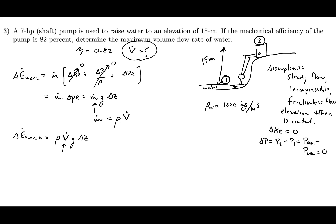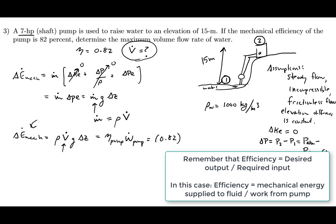Since we're solving for the volumetric flow rate, we need to calculate the mechanical energy. The pump is 7 horsepower, and the mechanical energy delivered to the fluid equals the efficiency multiplied by the pump power. So that's 0.82 times 7 horsepower, which equals 5.74 horsepower.